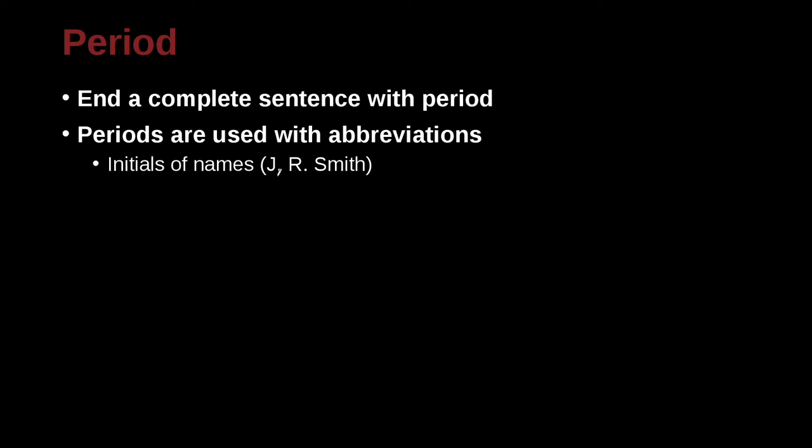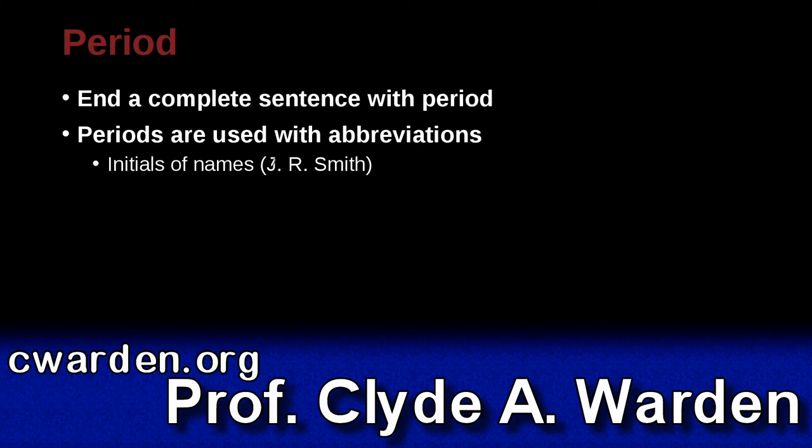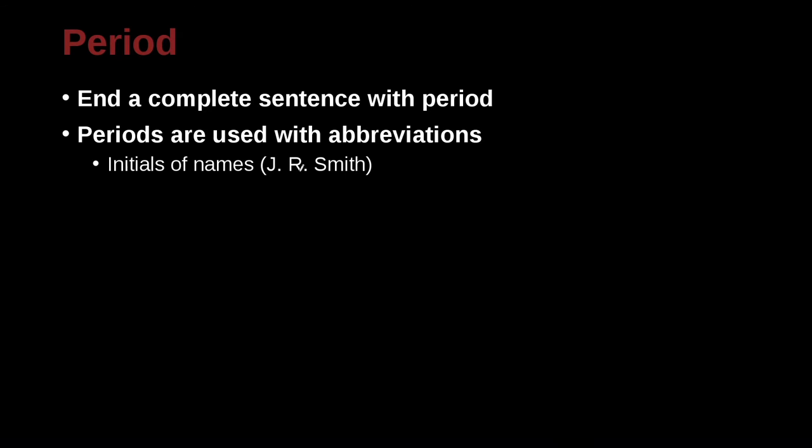So for example, we have J. R. Smith. His name is J—it could be Jack or John. R is his middle name. Smith is his last name. The first name and middle name are abbreviated, so we use a period here. Please note, space right there. You see that space right there.